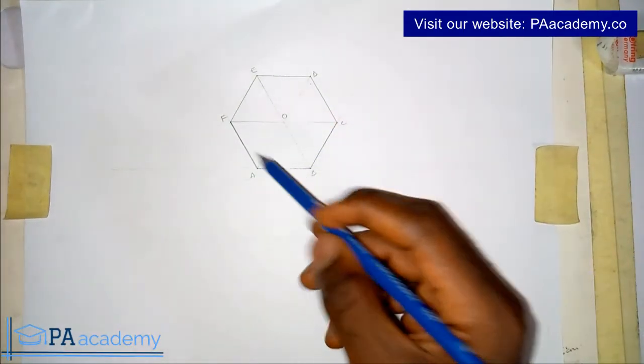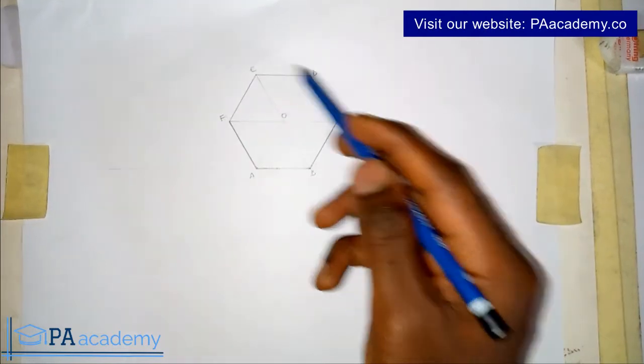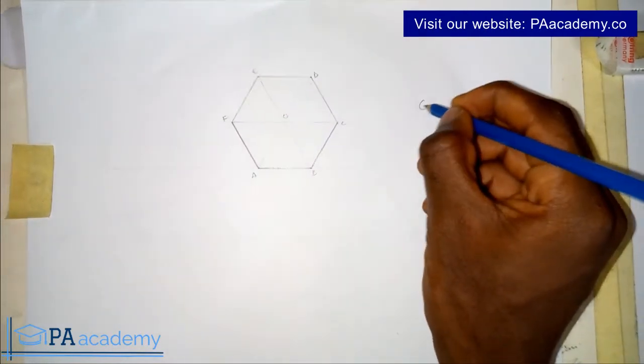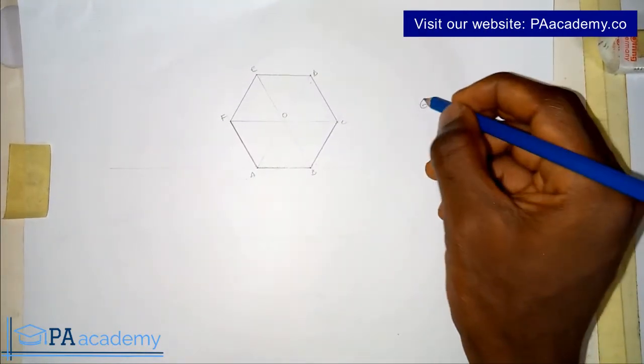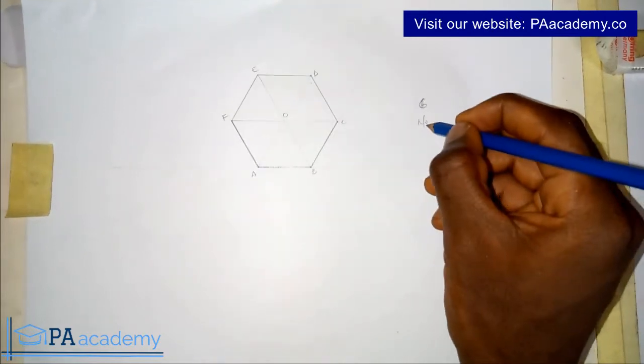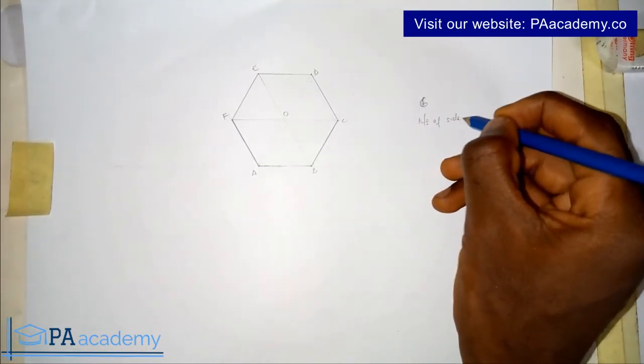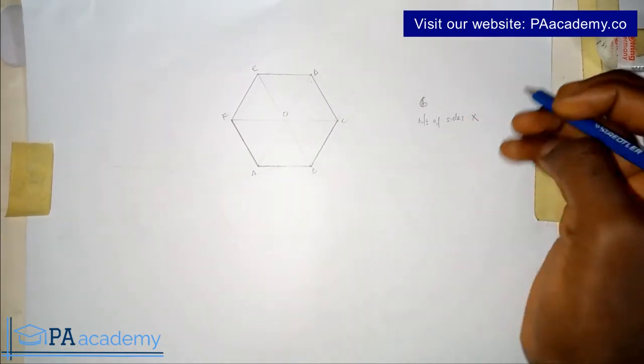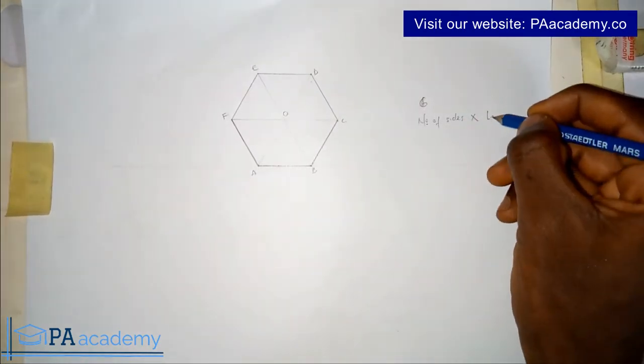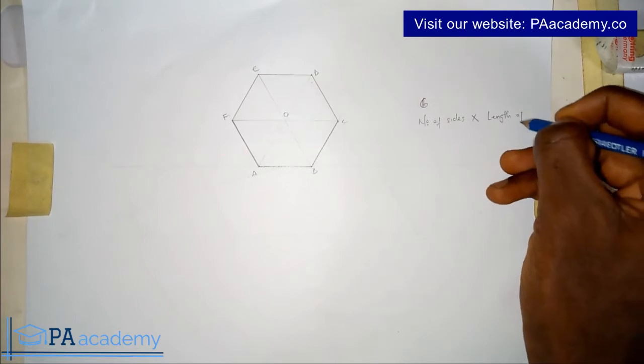So this is what I mean. If you look at this polygon, I said it's 3 cm and we are having 6 sides. So that is 6 sides. Okay, so let me just write number of sides multiplied by the length, by the length of side.